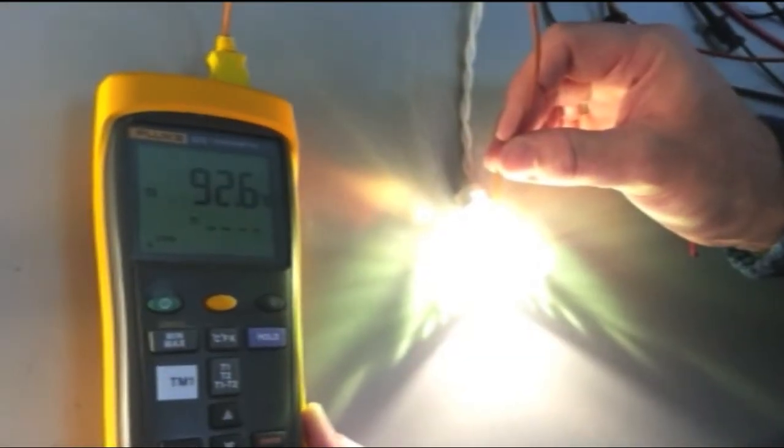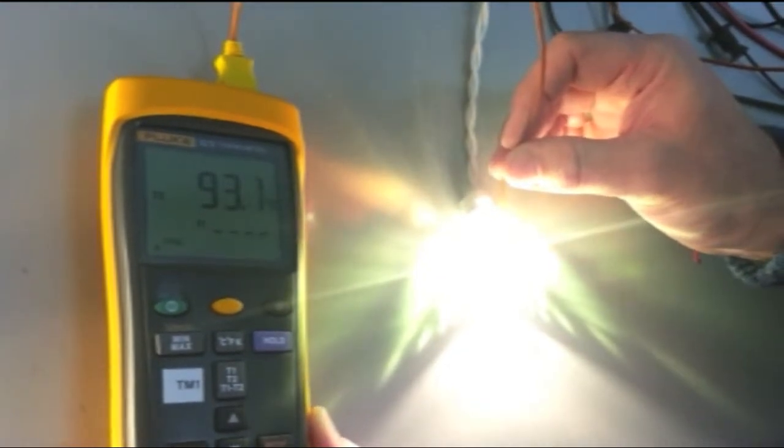A standard 20 watt halogen light bulb has a desk temperature of over 93 degrees Celsius.